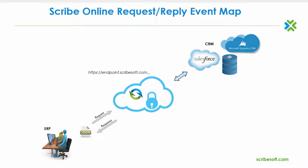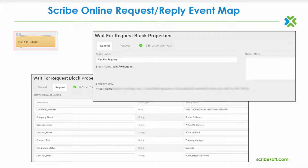Let's dig into the details of the ScribeOnline request-reply event map. There are specific ScribeOnline control blocks that are needed for the creation of a request-reply event map. These and other generic control blocks can be assembled to build out your design logic to address the unique use case at hand.